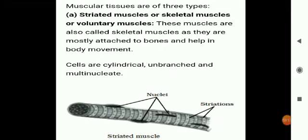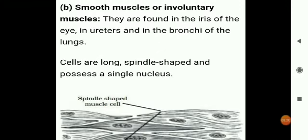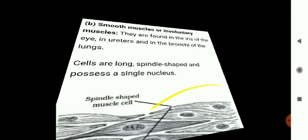Next are smooth muscles, also known as involuntary muscles. They lack transverse striations or bands, and their movement is not under our will. Smooth muscle cells are spindle-shaped and arranged in bundles. They are found in the alimentary canal, urinary bladder, dermis of skin, iris of eyes, and blood vessels.